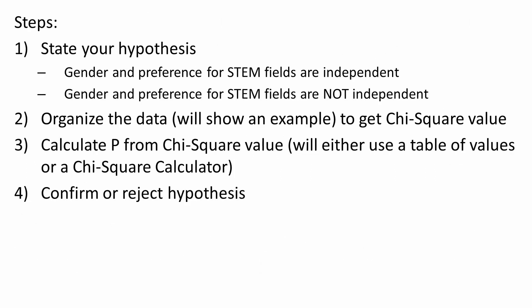In order to calculate chi-square tests to determine p-value, there are generally four steps. First, state your hypothesis — for example, gender and preference for STEM fields are independent, or gender and preference for STEM fields are not independent. Number two, organize the data to get the chi-square value. Three, calculate p from the chi-square value using a table of values or a chi-square calculator. And four, confirm or reject the hypothesis.